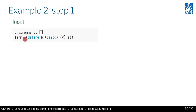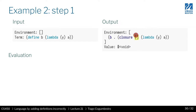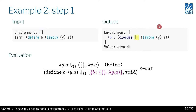We start with the first term to evaluate, which is define b, lambda y. When we evaluate it, look at your rule sheet. The crucial point here is that when you evaluate this lambda and convert it into a closure, it's going to capture the input environment — which is empty. The value is void, as before. The only thing to remember is that the environment stored in the closure is whatever is given as input, which in this case is the empty environment.